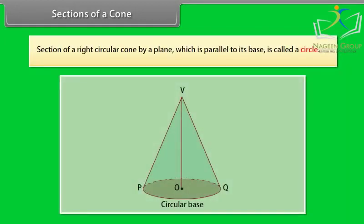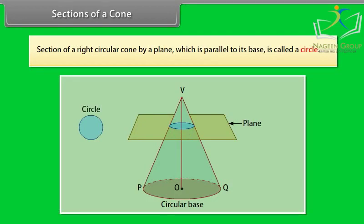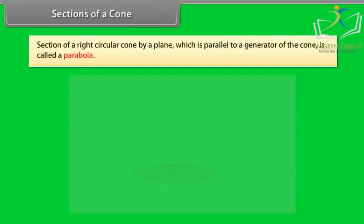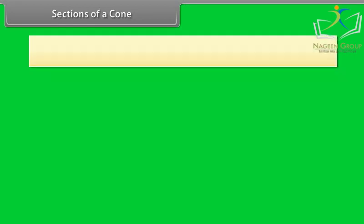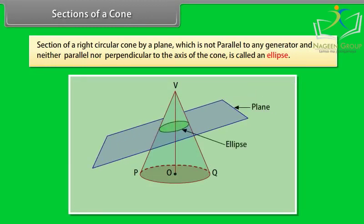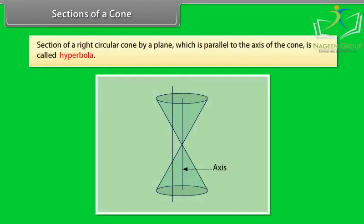We will discuss various sections of a right circular cone. A section of a right circular cone by a plane which is parallel to its base is called a circle. A section by a plane which is parallel to a generator of the cone is called a parabola. A section of a right circular cone is called an ellipse. A section by a plane which is parallel to the axis of the cone is called a hyperbola.